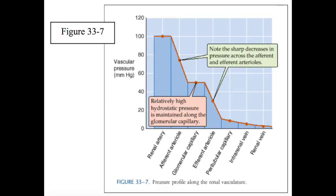On the other hand, at higher resistances, glomerular filtration rate begins to fall as the effect of a declining renal plasma flow dominates. These opposing effects on glomerular capillary pressure and renal plasma flow account for the biphasic dependence of glomerular filtration rate on efferent resistance during sympathetic stimulation.